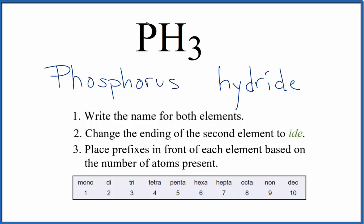Now we need to show how many of each atom we have. We have one phosphorus, so for the first element you don't do anything if you only have one. It's just phosphorus. For the hydrogen we have three. Three uses the prefix tri.